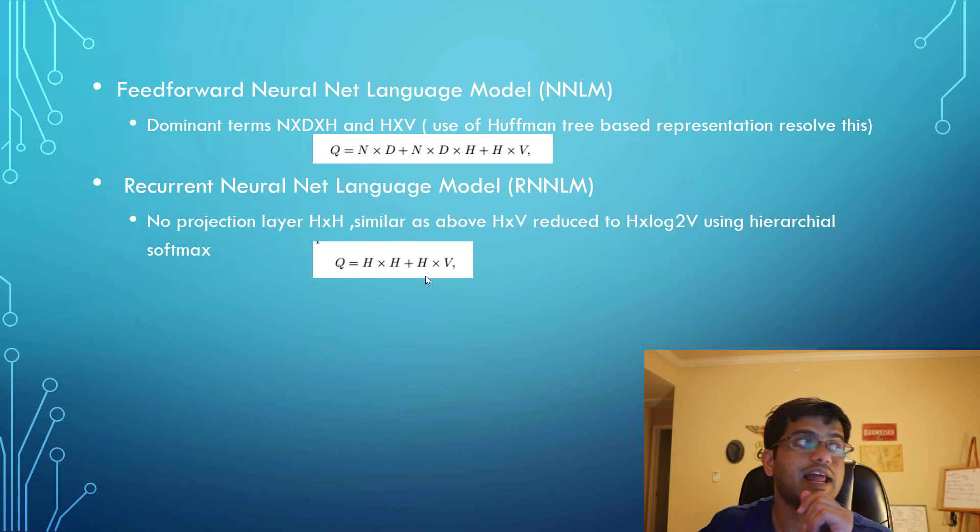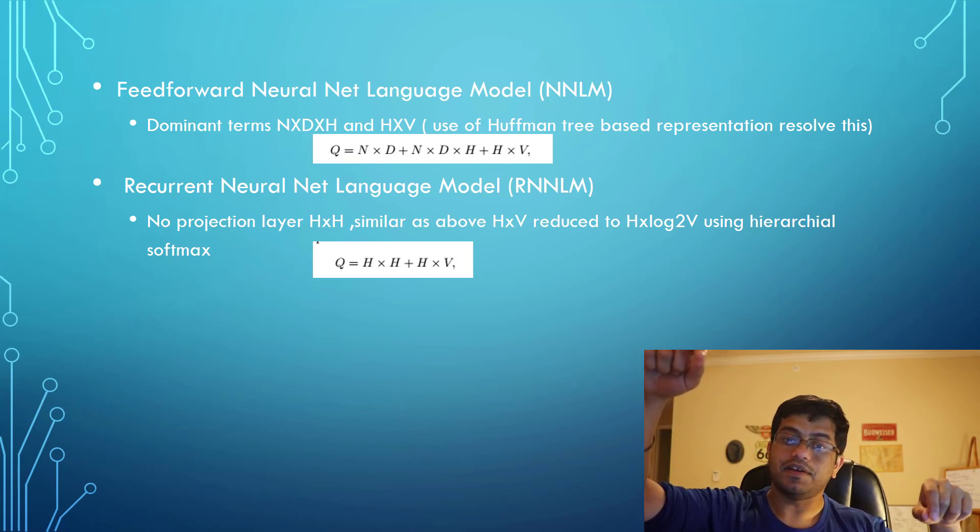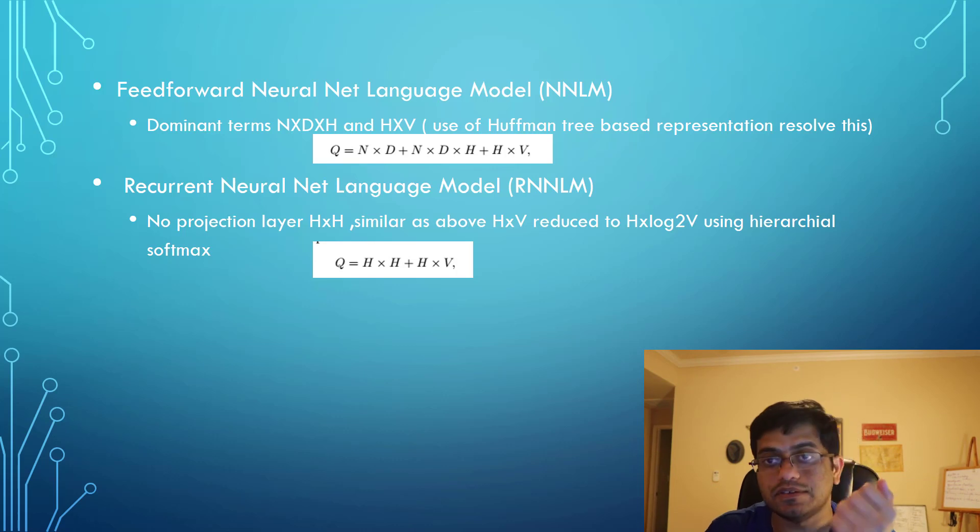Similarly, there's recurrent neural net language model, which is a progression over the neural network language model. It has a recurrent matrix that connects the hidden layer to itself using time-delayed connections. This allows us to have a memory structure, which was a suggestion from Benji's paper. Information from the past can be represented in the hidden layer state and gets updated based on current input and the previous time step. We use hierarchical softmax with Huffman trees, reducing complexity from H times V to H times log V. It doesn't have a projection layer, only hidden layer, so the dominant factor becomes H times H.